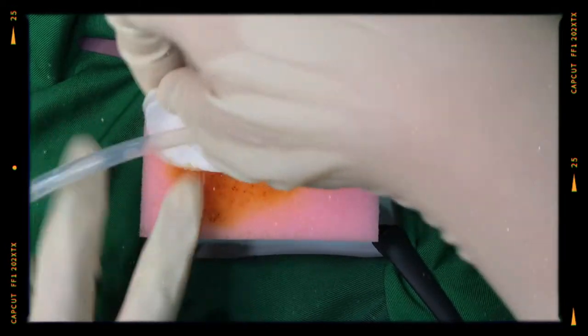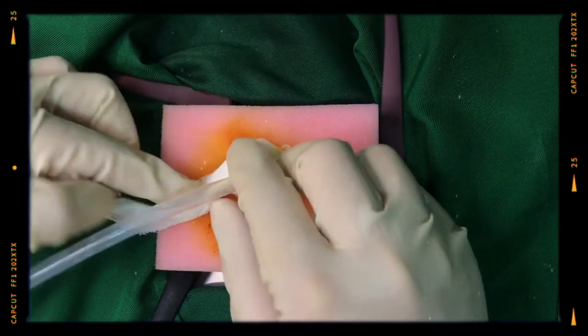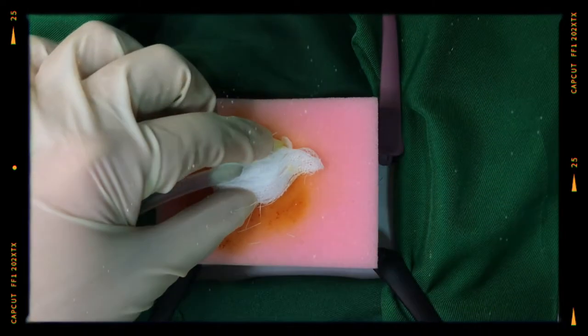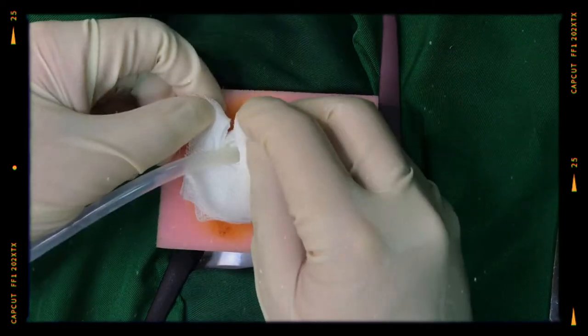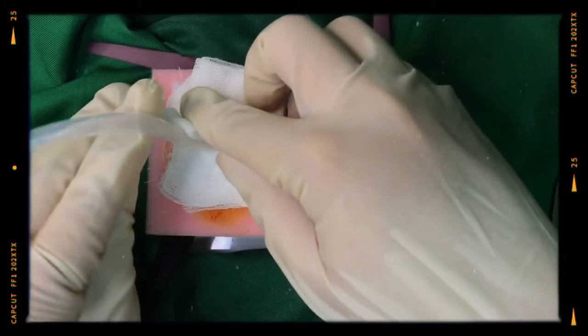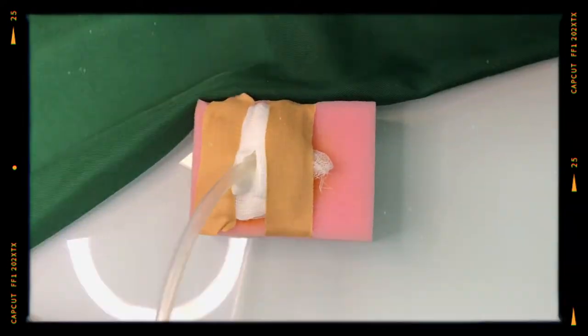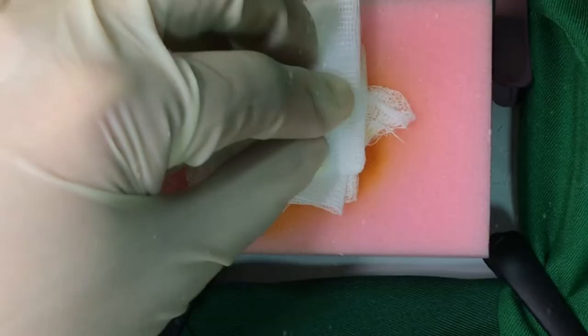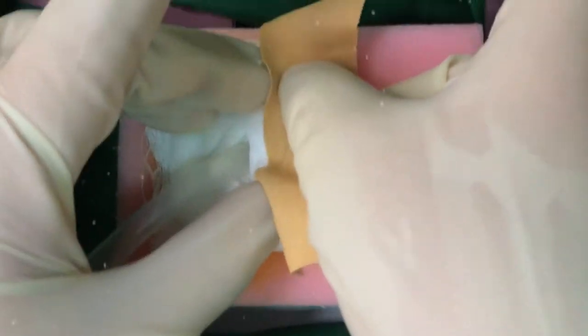Place vaseline gauze dressing around the tube and push it against the wound to prevent air leaks. Dress the wound with several pieces of sterile gauze around the tube. Remove the drapes and do after care. Secure the gauze in place with a plaster.